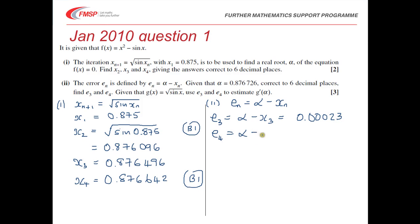Then we've got to find e_4, which will be alpha minus x_4. So again we're using the value we've got over here for x_4, and the value of alpha. We do that subtraction, then we'll get 0 point, quite small numbers, 4 noughts 84.